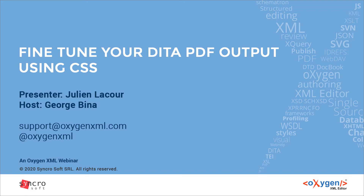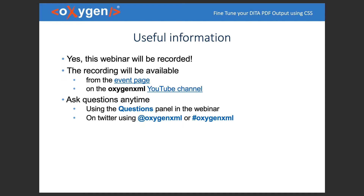That new approach is to use CSS to style the PDF output. Oxygen XML Editor helps with this by providing an engine called Oxygen PDF Chemistry that allows obtaining PDF based on CSS, with additional support in particular for DITA PDF output. My colleague Julian Lacour, who is part of the PDF Chemistry team, will give you insight into these possibilities.